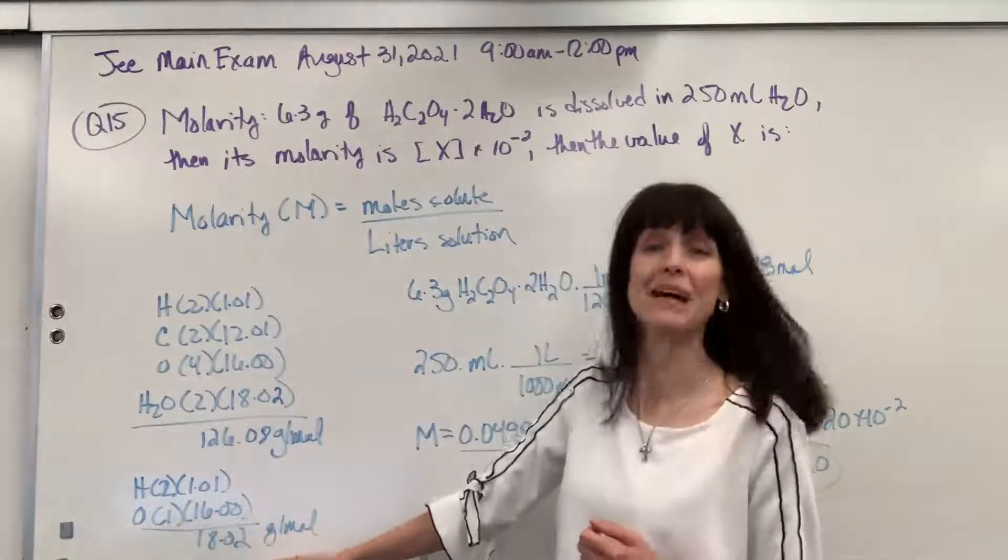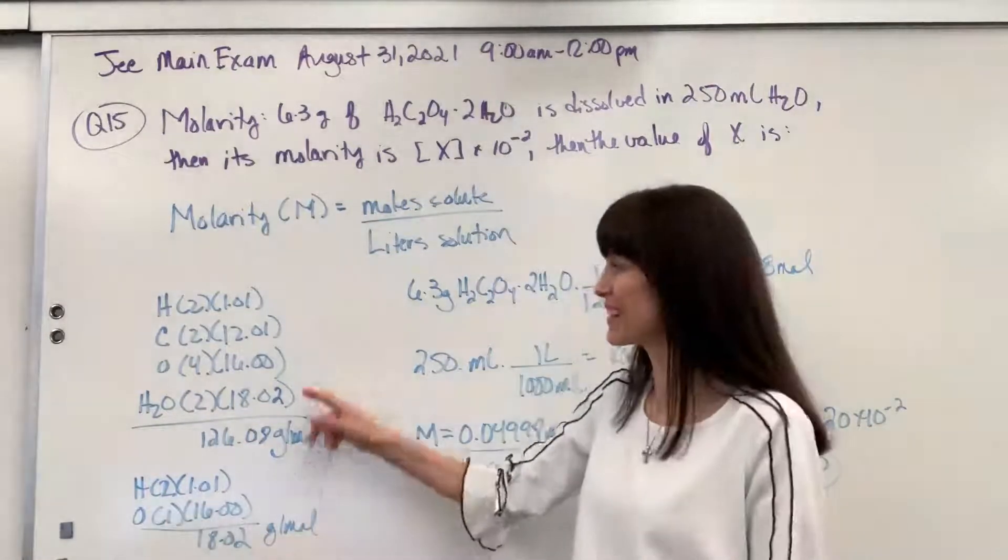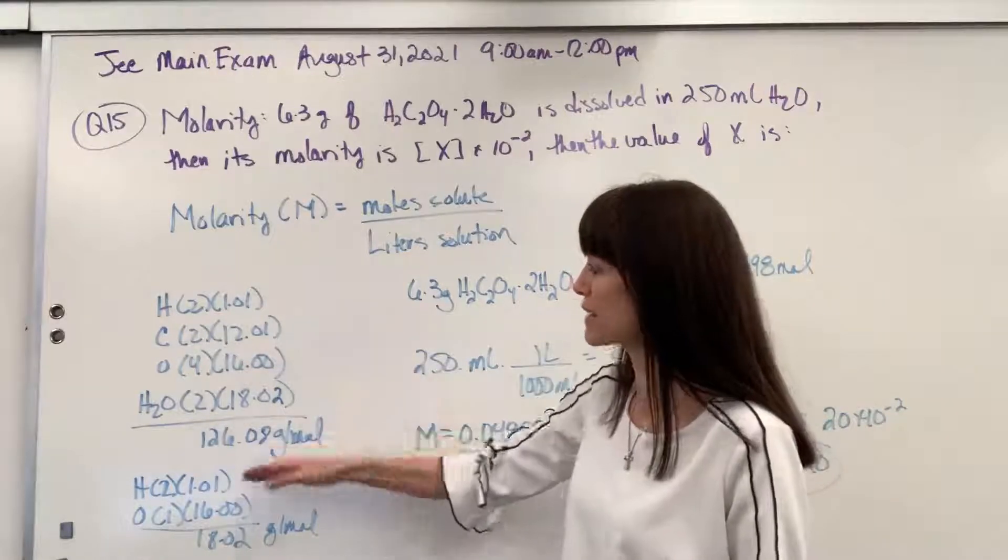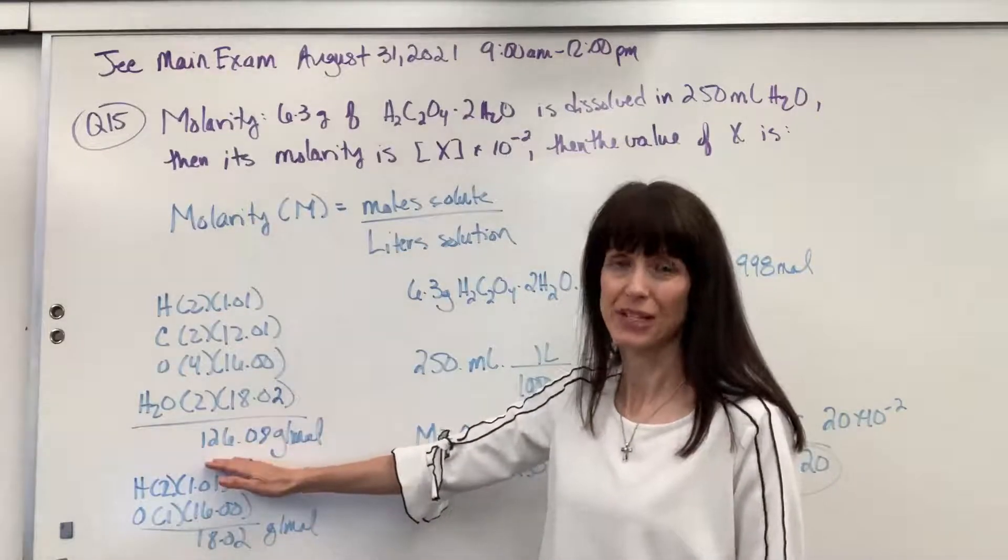Your two hydrogens times 1.01, one oxygen times 16, add it up, 18.02. There it is. So we multiply and add everything. Here's your molar mass for the hydrate.